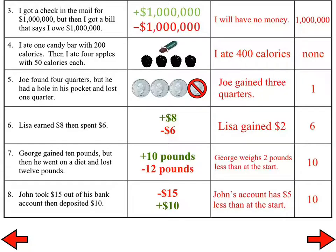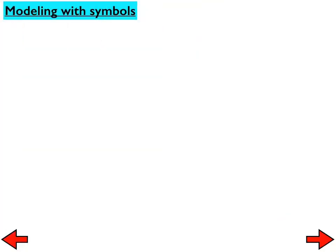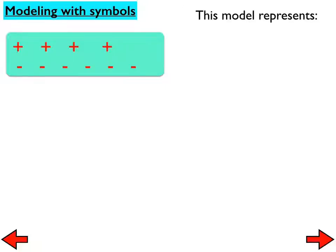This idea of a zero pair comes into play a lot when we are adding or subtracting integers. Now I'm not going to start on the problems on this page yet — I just want you to look up here. I have a picture where I'm using symbols. My question to you is, what do you think this model represents as an integer?